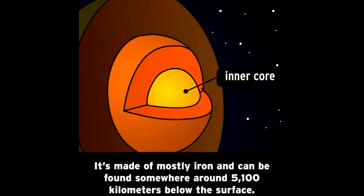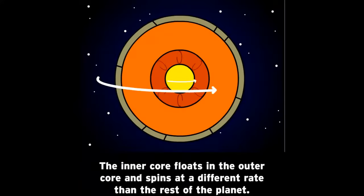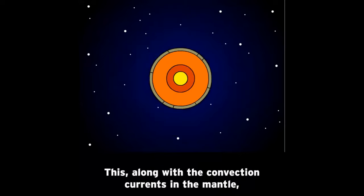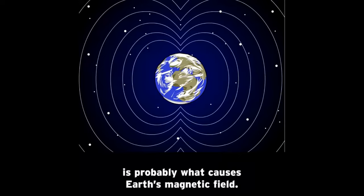It's made of mostly iron and it can be found somewhere around 5,100 kilometers below the surface. The inner core floats in the outer core and spins at a different rate than the rest of the planet. This along with the convection currents in the mantle is probably what causes Earth's magnetic field.